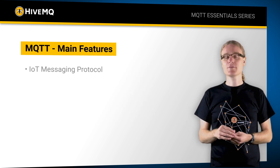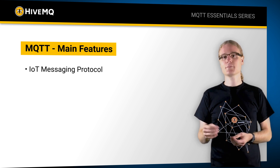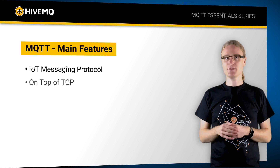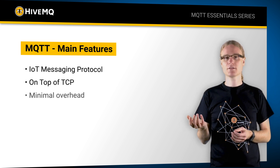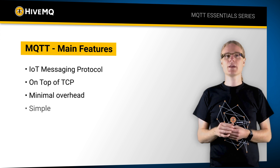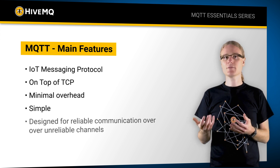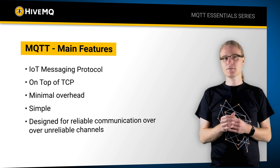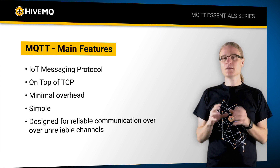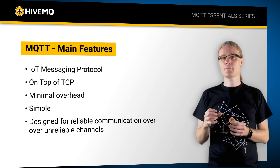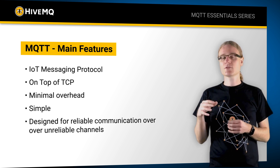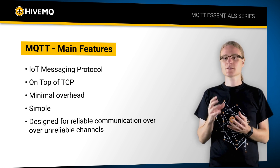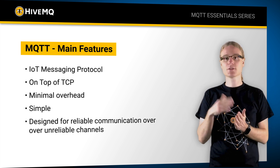First of all, MQTT is an Internet of Things messaging protocol. It is built upon TCP/IP, it has minimal overhead, it's simple, and it's designed for reliable communication over unreliable channels. Many Internet of Things scenarios have bad connectivity — for example, Wi-Fi or a mobile network — where communication is sometimes pretty hard and you have a lot of interruptions.